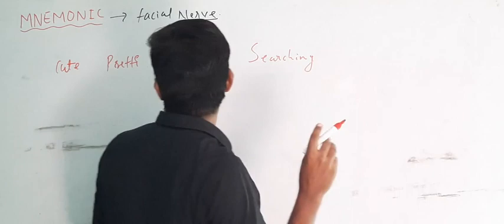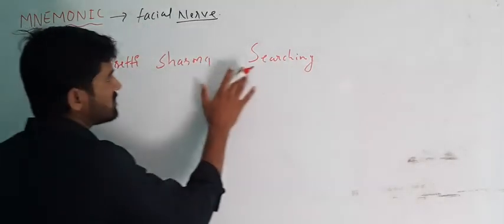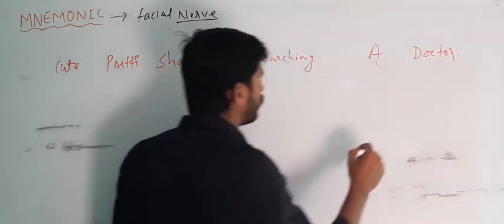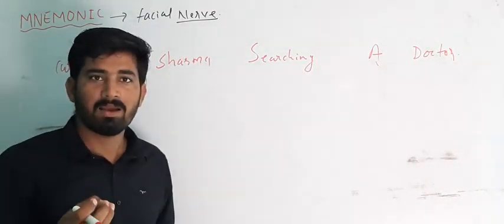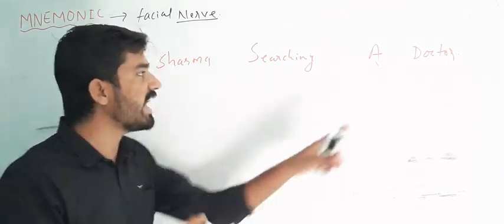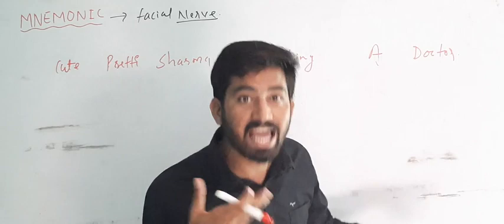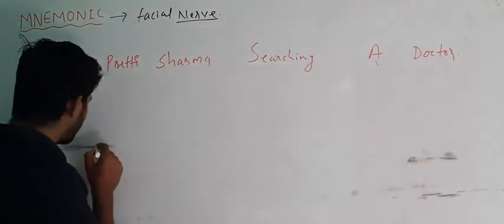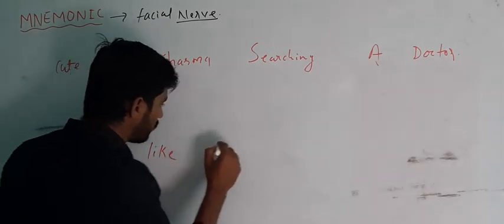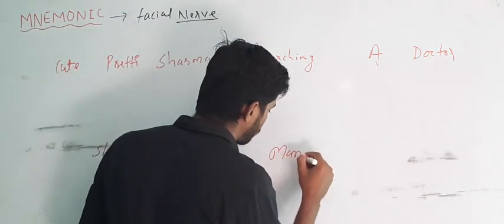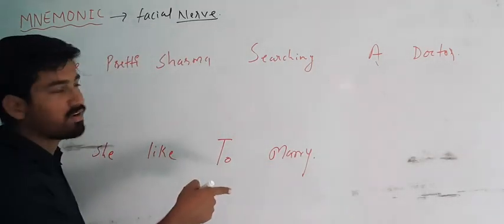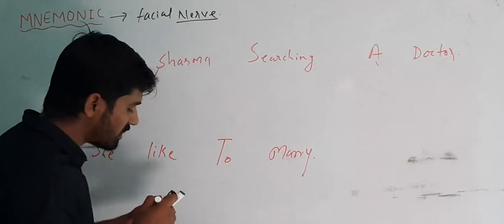Searching — Cute Preeti Sharma searching a doctor. Okay. So Preeti Sharma is a medical student, right? Cute Preeti Sharma searching a doctor. Why? Because she likes too many. See — C, like, to, marry. So 'C like to marry.' This is for the branches of the facial nerve.